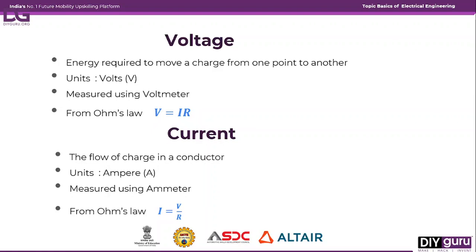Now coming to current. Once voltage is applied, the charge particles start moving from one point to another. When all the charge particles start moving in one direction, the flow of these charge particles is what we call current. The unit of current is amperes, and it is measured using an ammeter. From Ohm's Law, I = V/R, where V is the voltage across the element and R is the resistance of the element.